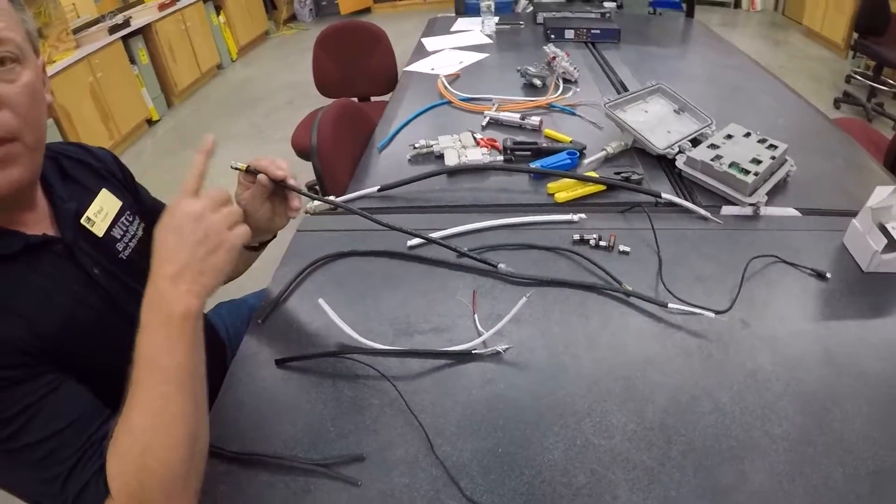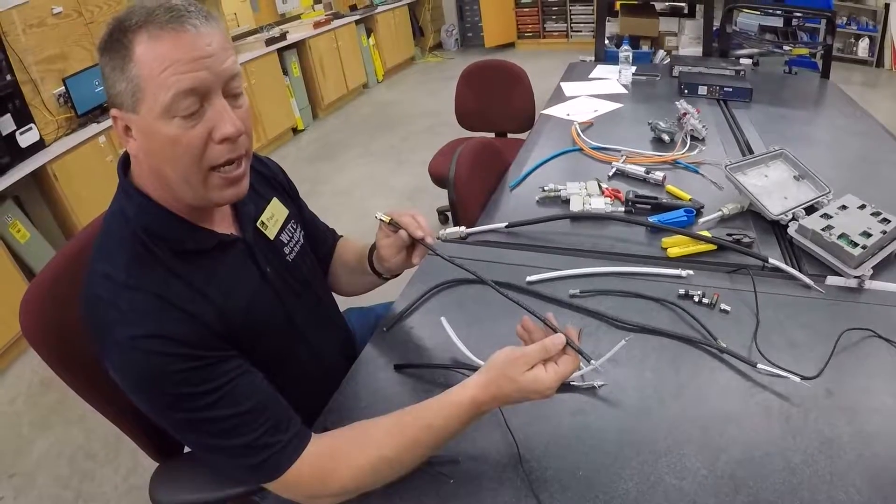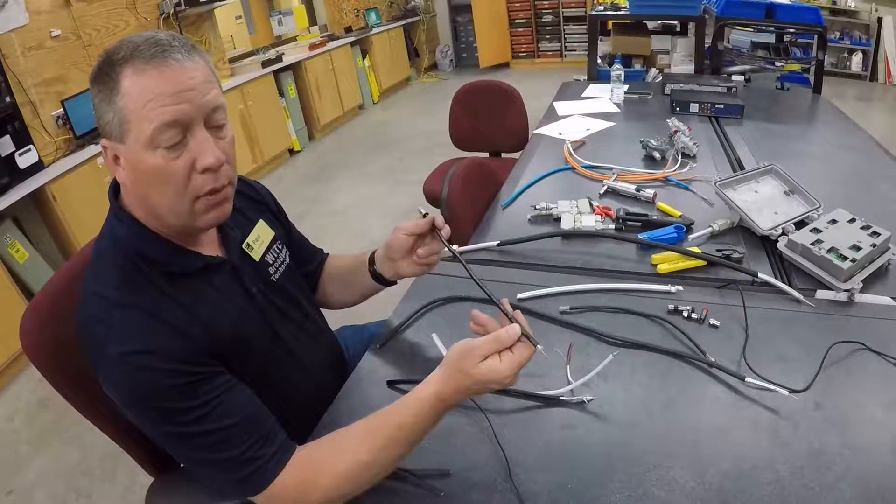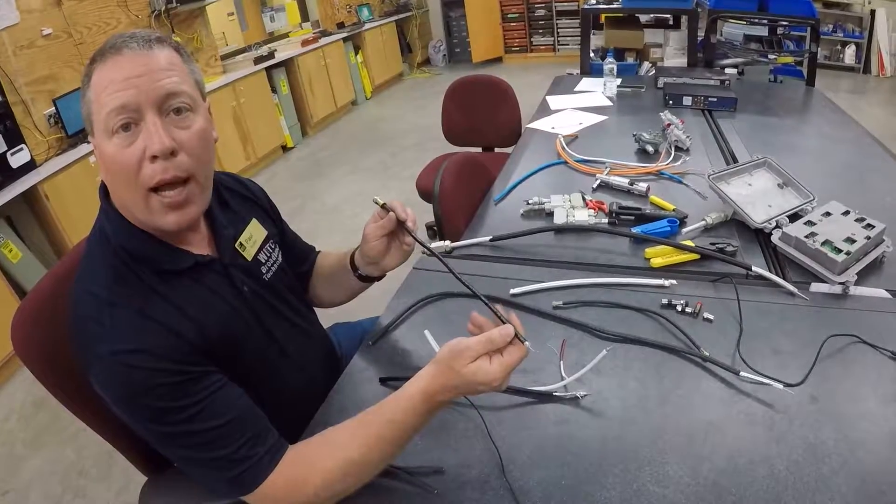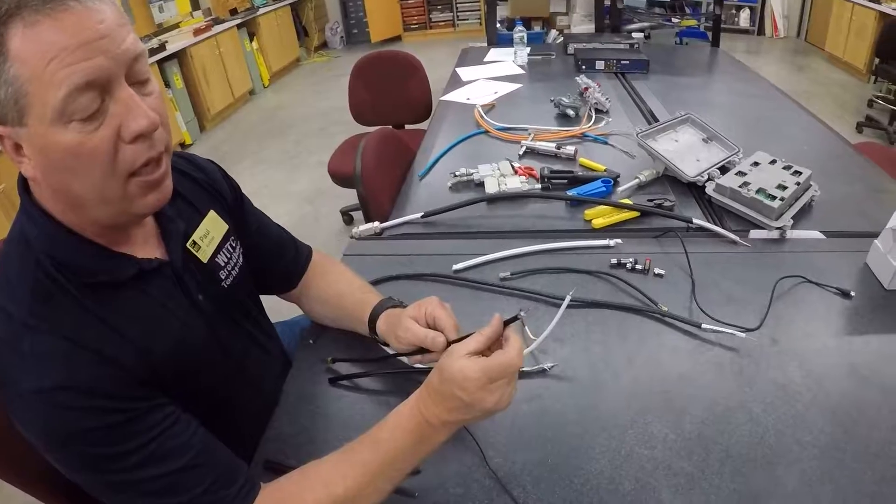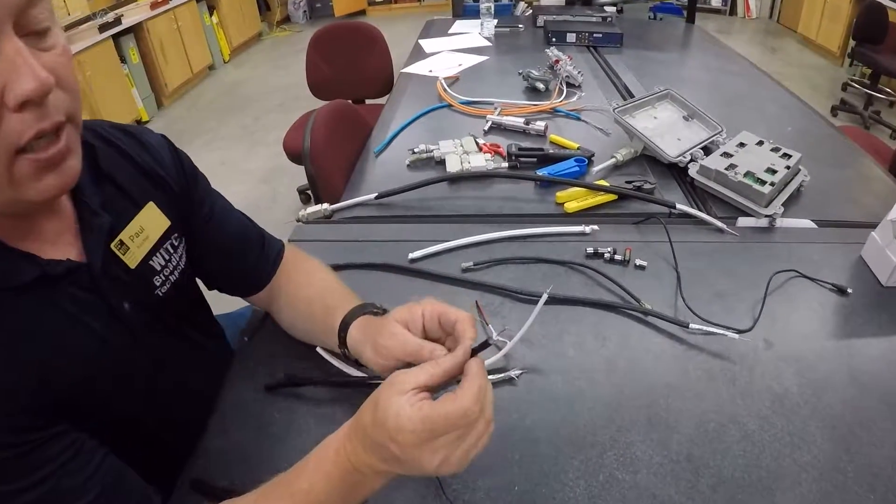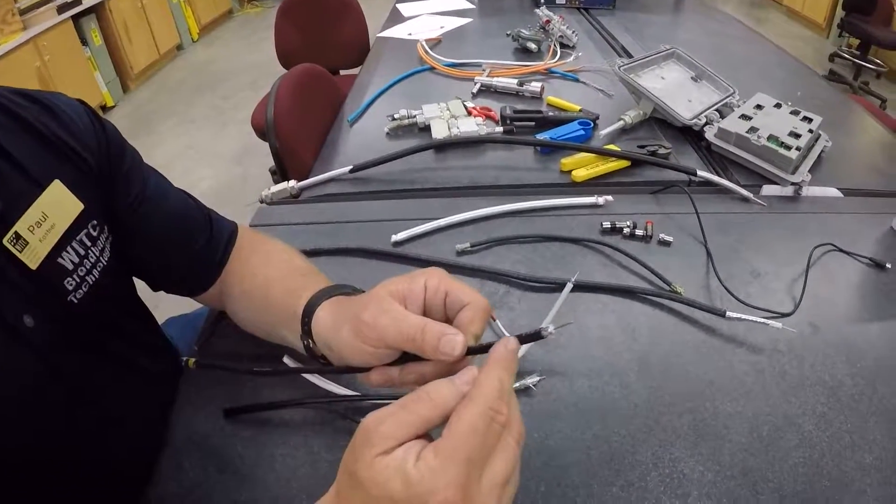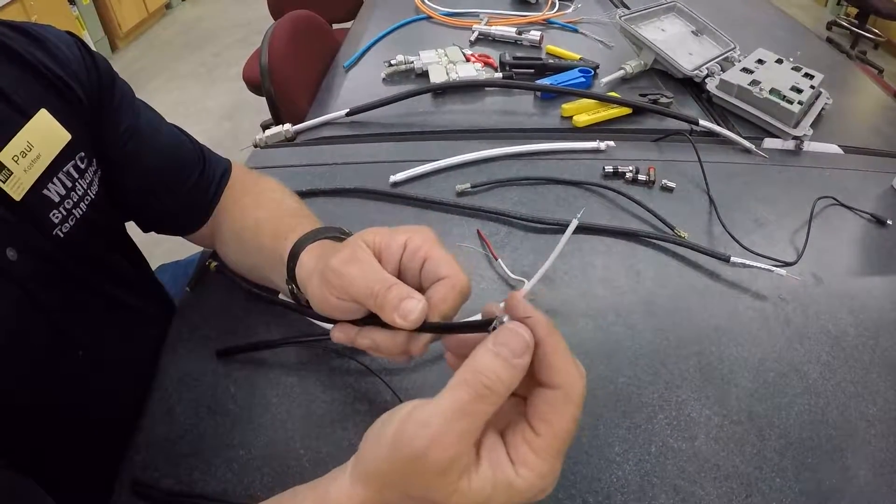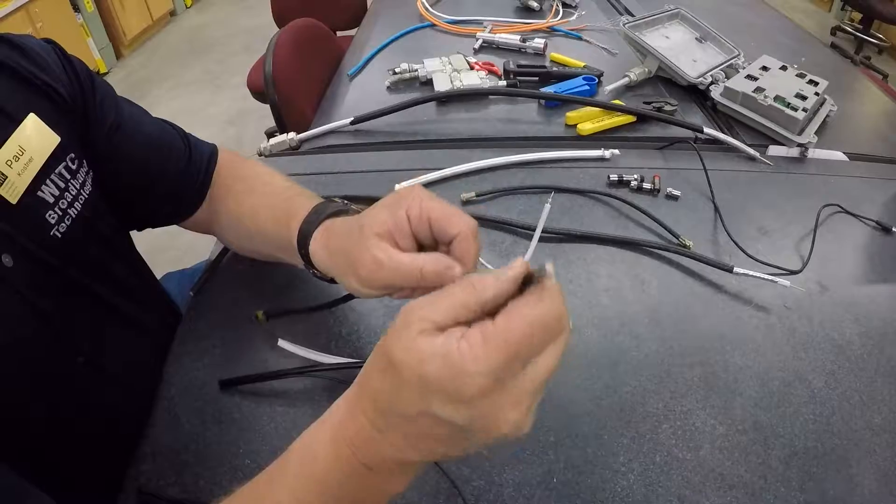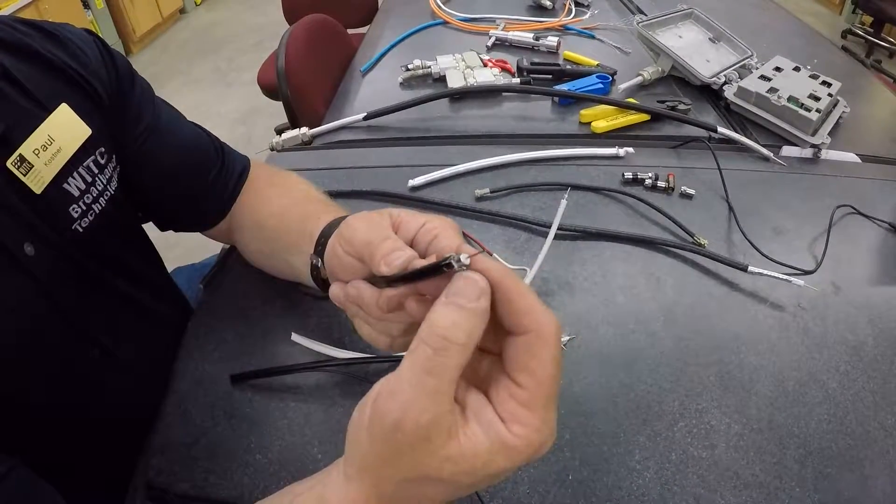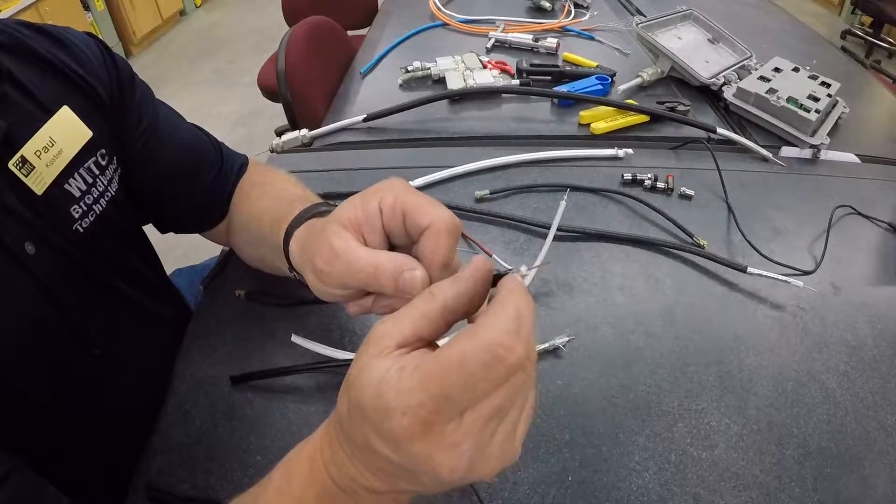And then buried to the actual network interface device that is connected to a ground block, which you'll see in a later video also. Some of the characteristics of this cable I want to identify. You have your black polyethylene coating. You have a metallic braid that gives the flexibility. You also have an aluminum sheath, which is your outer conductor.